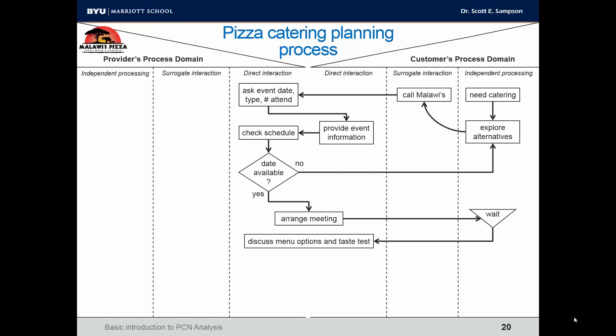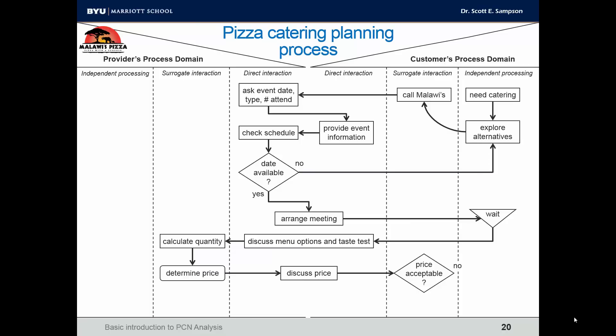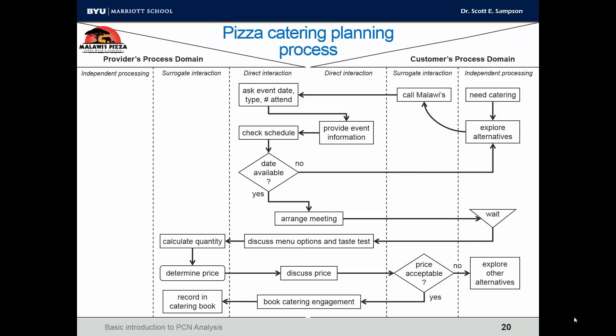They discuss menu options, and at the time of the meeting, they maybe do some taste testing as described in the case — possibly at a Malawi's restaurant. In surrogate interaction, they calculate the quantity — the Malawi's person makes decisions based on the customer's selections — and determine the price based on their judgment and price schedule. They then discuss the price in direct interaction. If the price is acceptable, the customer makes that decision; if not, the customer explores other alternatives. If acceptable, they book a catering engagement and record it in the catering book. This covers the planning part of the process.